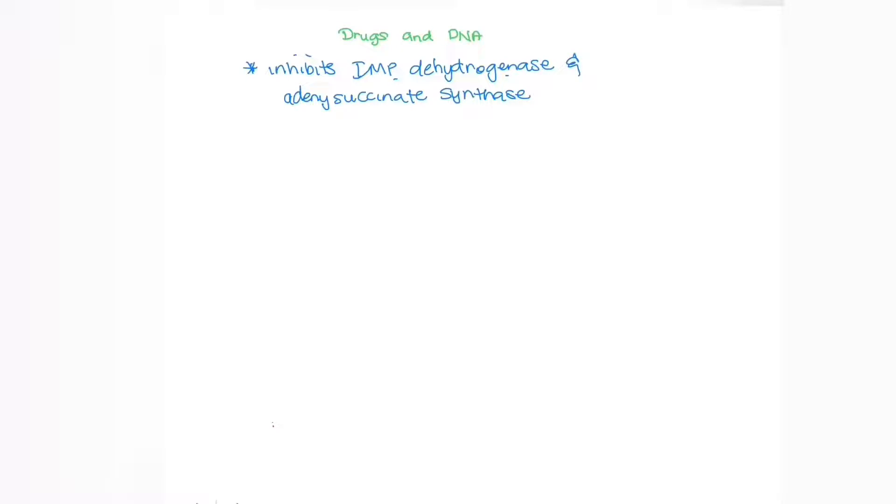It should be noted that this drug can also inhibit IMP dehydrogenase and adenylosuccinate synthase, which are two important enzymes in the synthesis of purines.